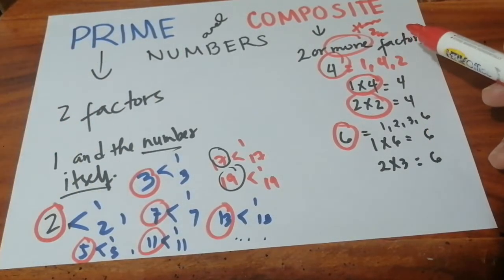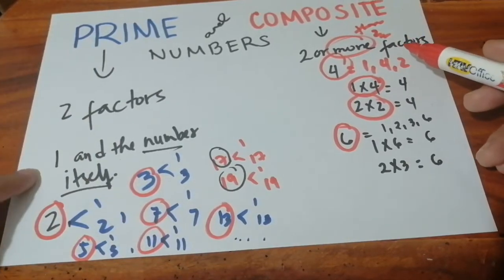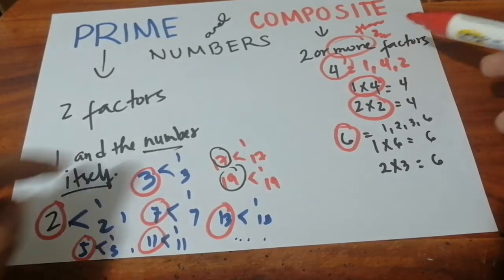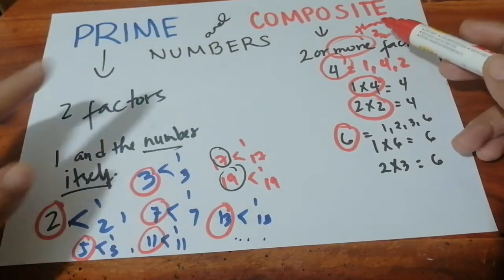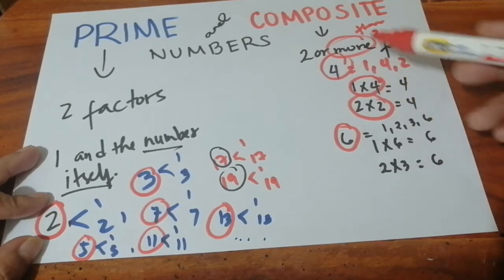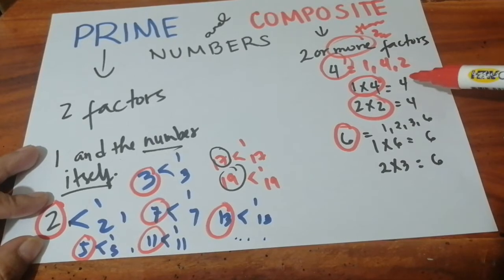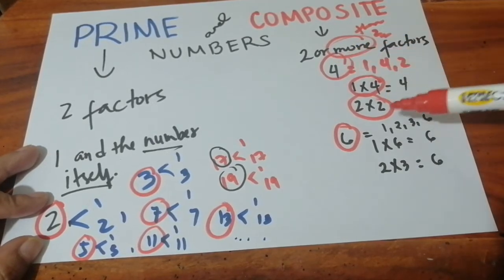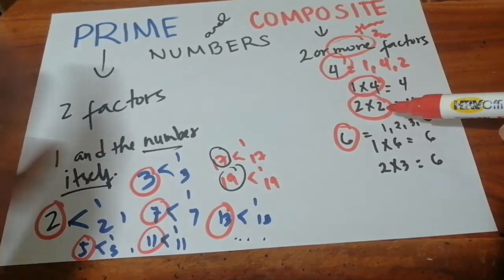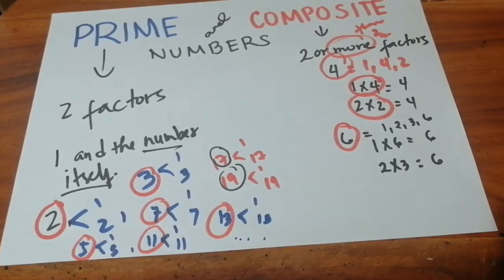That's the difference between prime and composite numbers. To repeat: prime numbers have only two factors, and that factor is one times the number itself. Whereas composite numbers have more than two factors — meaning not just one and that number, but there are other numbers that can multiply or divide into that number, aside from one and the number itself. When it has three or more factors, that number is a composite number.